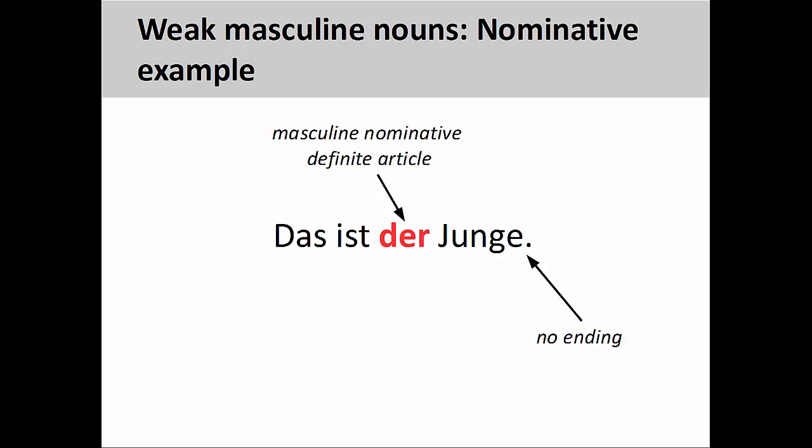In the sentence you see on the screen, das ist der Junge — that is the boy — the noun der Junge is in the nominative case since the third-person singular verb ist shows no action. It simply reports a condition or state of being. Since the noun is in the nominative, no ending is added.